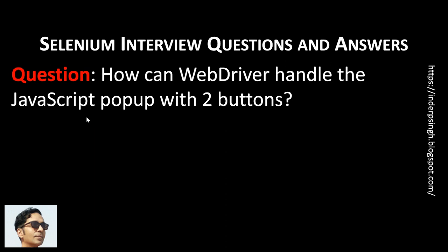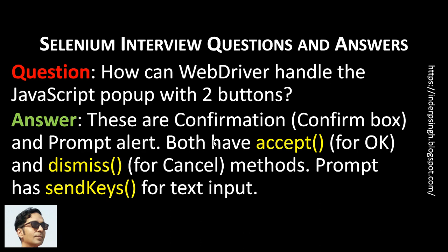Next, in automation engineer interview questions and answers: how can Selenium WebDriver handle the JavaScript popup with two buttons? There are two types of popups with two buttons. One is the confirmation or confirm box and the other one is the prompt alert. Both have the accept method to press the OK button and dismiss method to press the cancel button. Prompt alert also has the sendKeys method for text input.